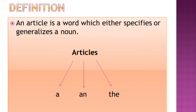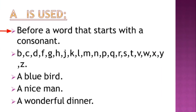Let us recall our previous knowledge which we have learnt in our previous classes. 'A' is used before a word that starts with a consonant. Consonants are b, c, d, f, g, h, j, k, l, m, n, p, q, r, s, t, v, w, x, y, and z. Here are some examples where we use 'a': a bluebird, a nice man, a wonderful dinner.